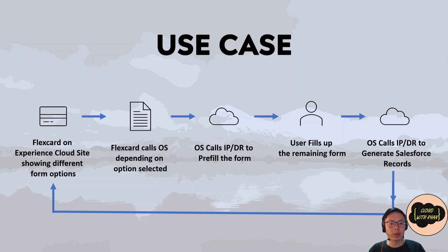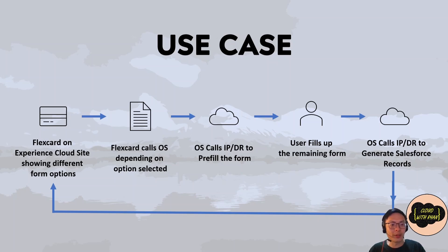This is actually a perfect use case for OmniStudio, and you can build it relatively quickly. You would have a FlexCard on the Experience Cloud site showing different buttons for each insurance option. The FlexCard then calls the OmniScript depending on the option the user selected. If the user is logged in, the OmniScript calls the integration procedure or data raptor to pre-fill the form based on the user's information. The user fills up the remaining form, and in the background, the OmniScript calls the integration procedure or data raptor to generate or update Salesforce records like accounts and contacts, create an application record, and create a case record so the agent can follow up. The user also receives an email.